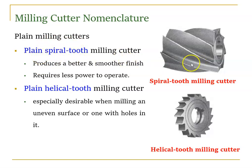The plain spiral tooth milling cutter produces a better and smoother finish and requires less power to operate. The helical type is especially used when milling uneven surfaces or surfaces with holes. If the surface is flat with negligible variation, we go with plain spiral. If the surface has peaks and valleys with high variation, we use the helical type.